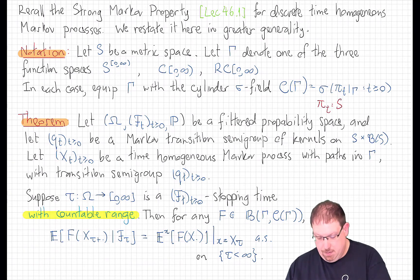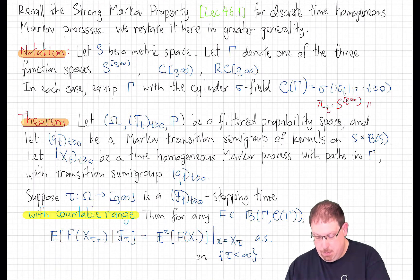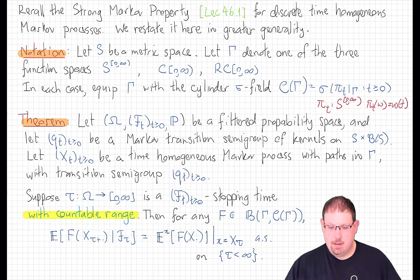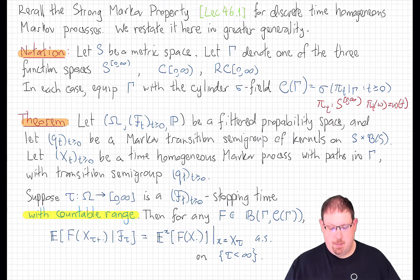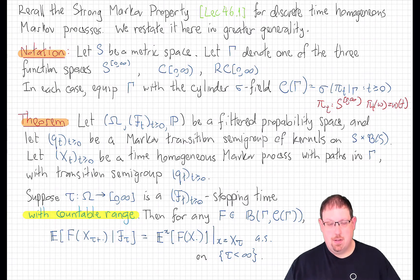Those projections are the restrictions of the projection on the full function space. Pi t of any function from the positive time interval into S is the map pi t which takes the path omega to the state omega of t. In lecture 46.1, we proved the strong Markov property for discrete time Markov processes. That same proof holds for continuous time Markov processes, provided that the stopping time takes only a countable number of times in its range.